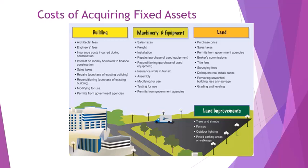Land is essentially the only fixed asset for which we do not record depreciation expense. The reasoning is that land has an unlimited useful life, so there is no useful life across which to allocate the cost. Land improvements, however — things like parking lots, trees and shrubs around the factory or corporate office — are major long-term improvements done to the land, and we do record depreciation expense on those.